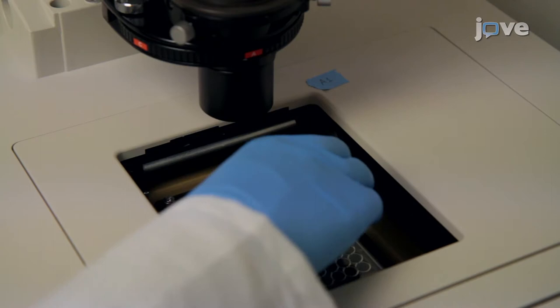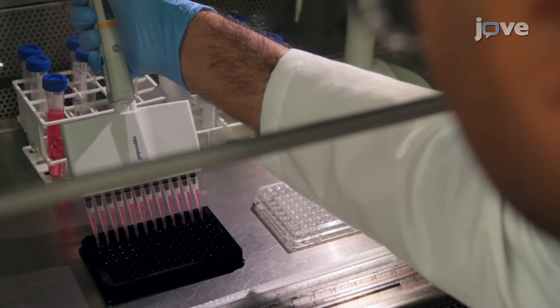At the end of the experiment, remove the 96-well plate from the HCS system. Under sterile conditions, collect conditioned medium samples from each well and transfer them to a fresh 96-well plate. These samples can later be used for an ELISA.